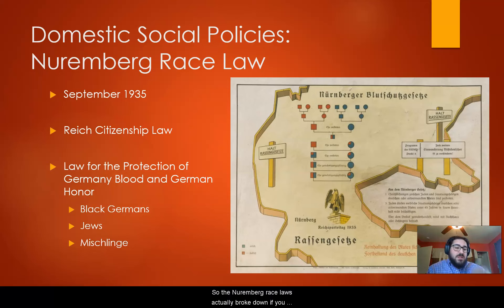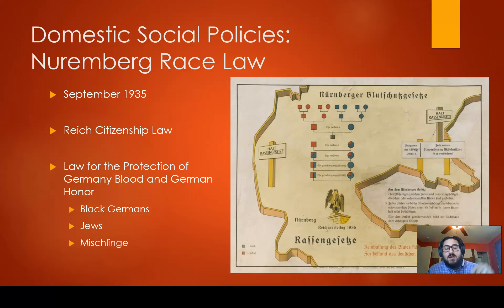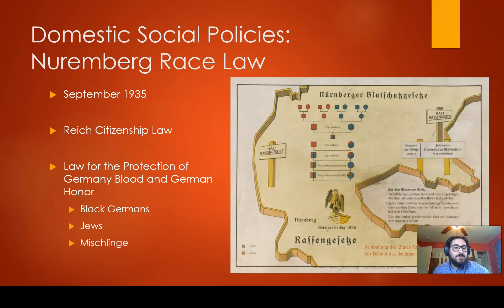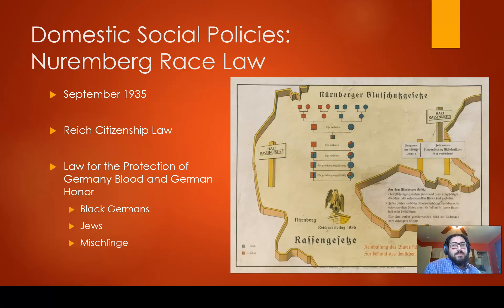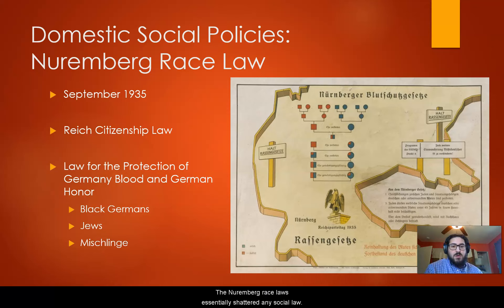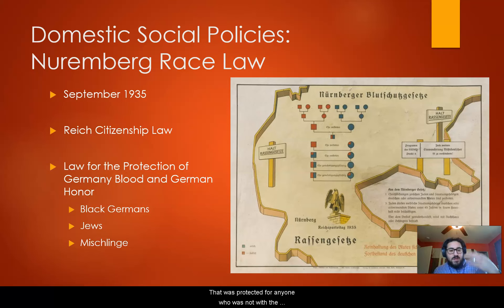The Nuremberg Race Laws essentially stripped away your rights if you were not German, did not have Aryan blood, or could not prove it — losing roughly 90% of your rights by 1935, and all of your rights by 1938. The laws shattered any social protections for anyone the Nazi government did not deem racially pure Aryan.